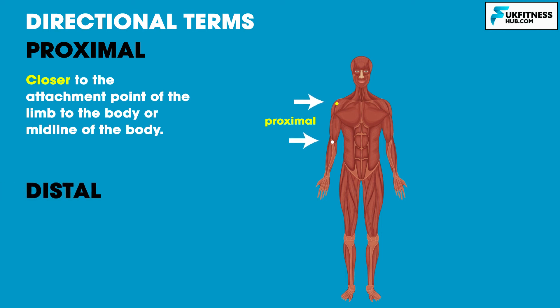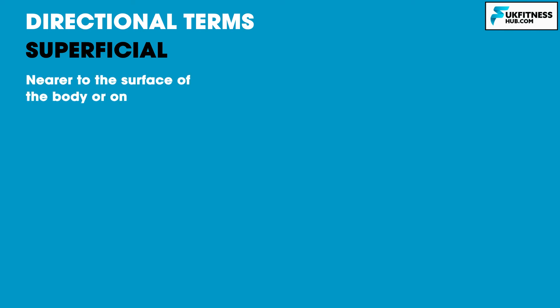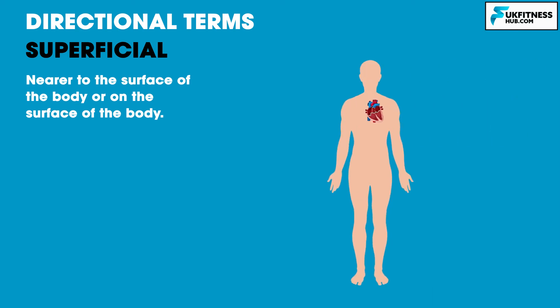Distal means further away from the attachment point of the limb to the body or midline of the body. For example, the wrist is distal to the elbow joint. Superficial means nearer to or on the surface of the body. For example, the skin is closer to the surface than the heart, therefore the skin is superficial to the heart.